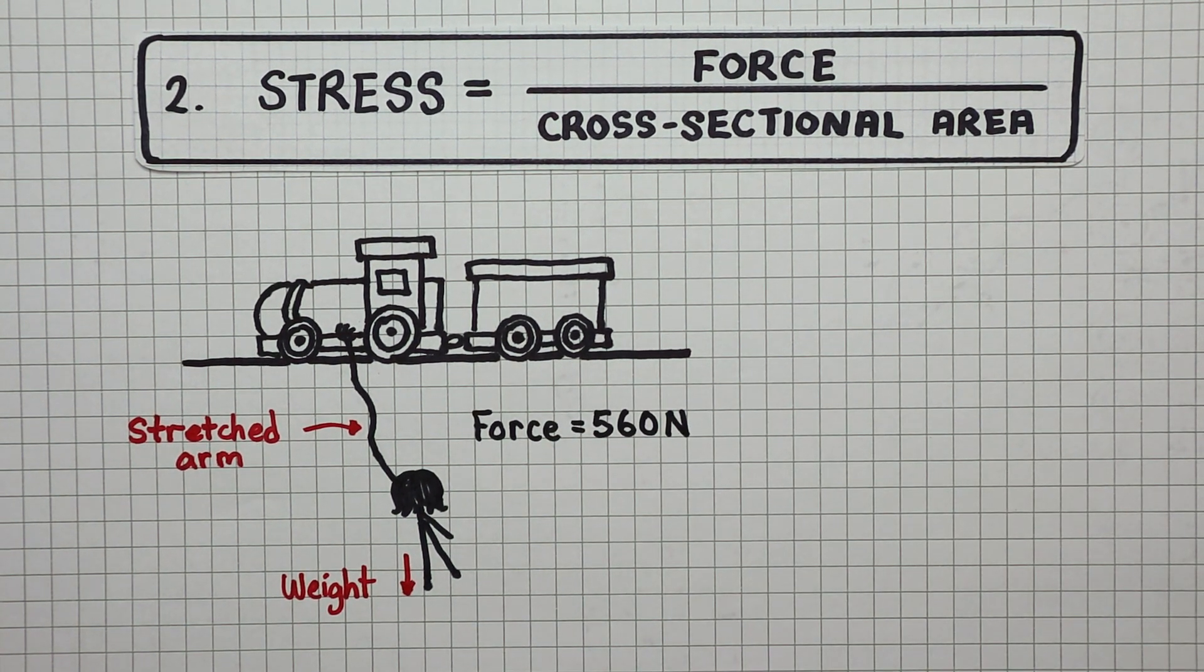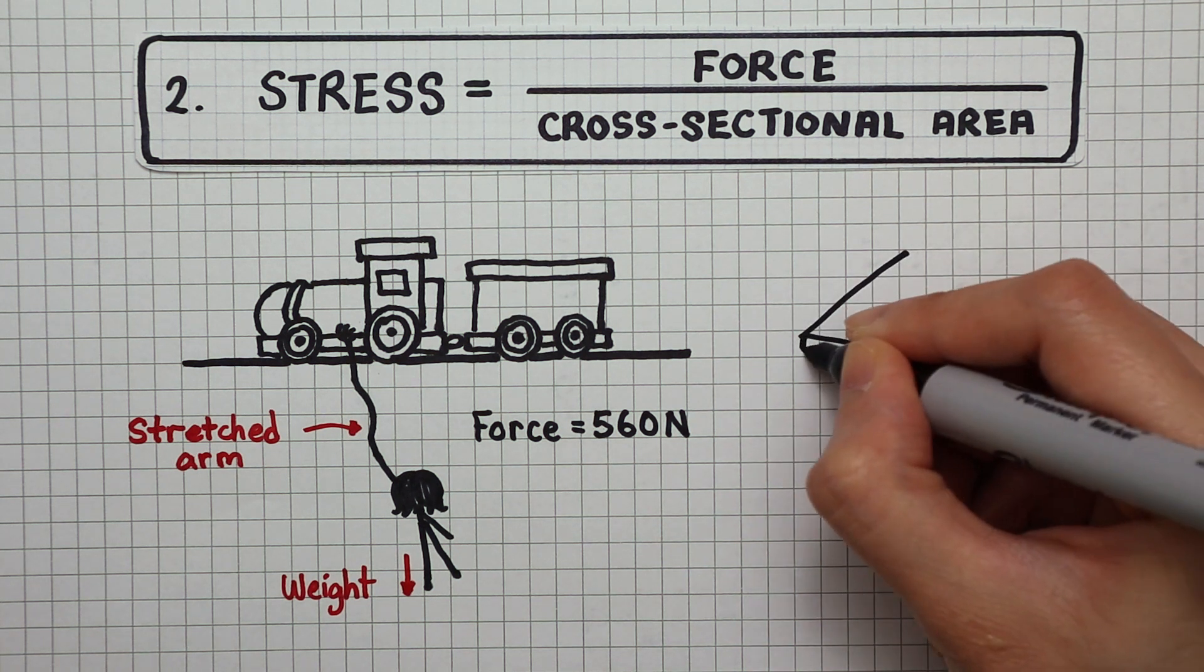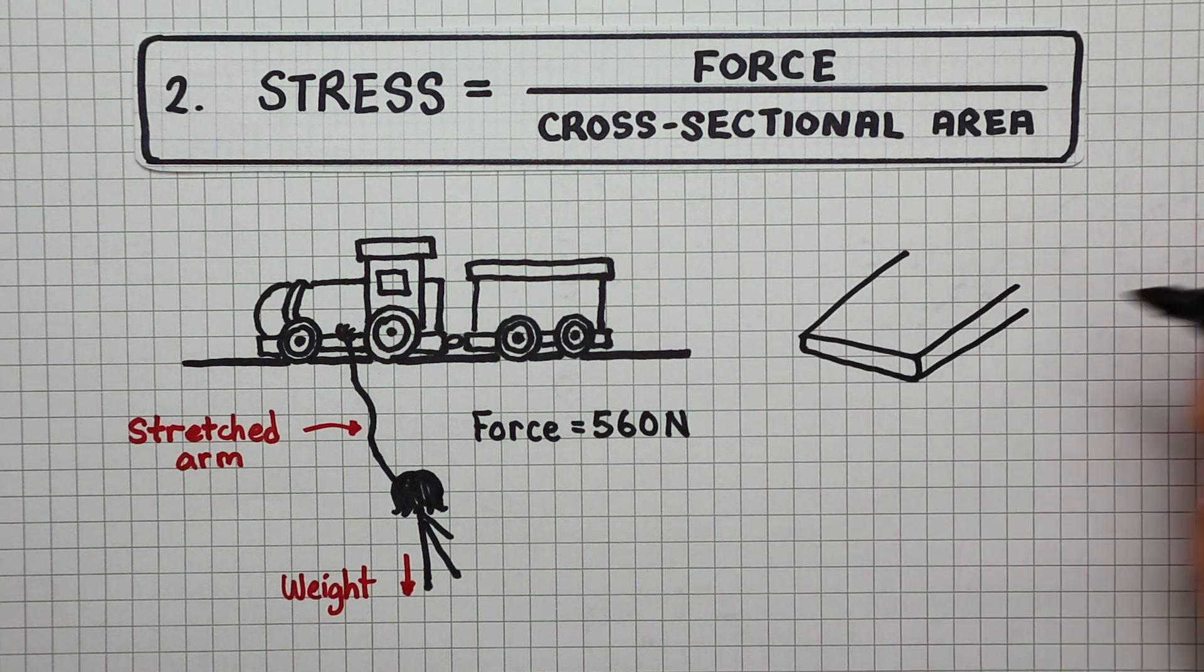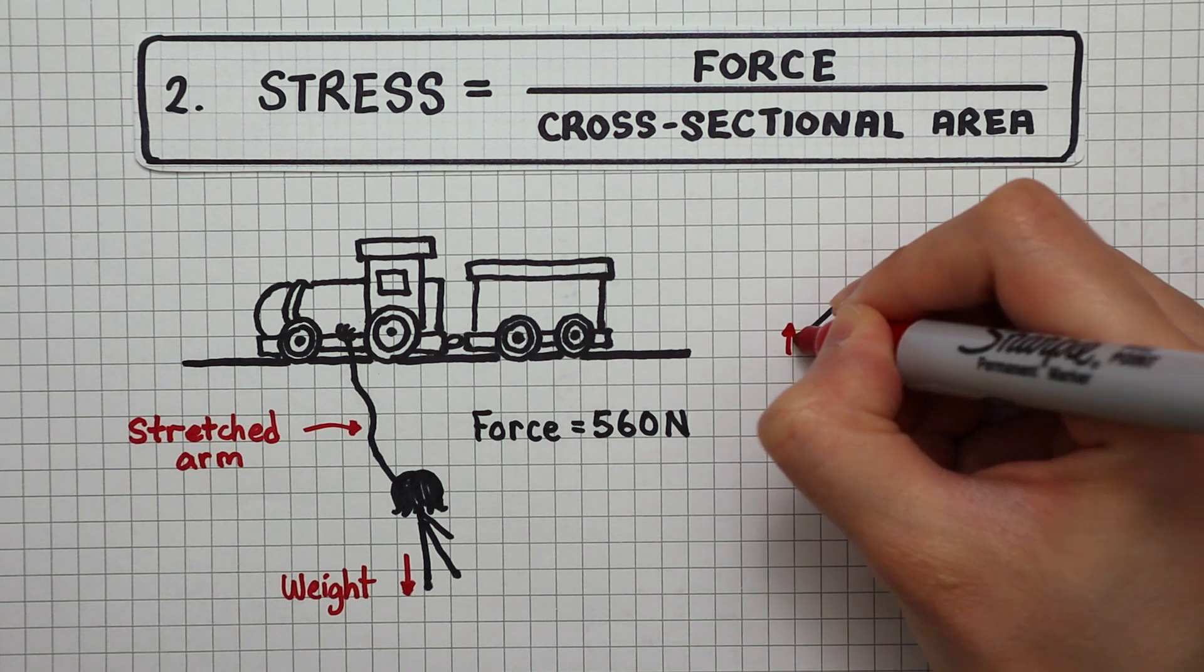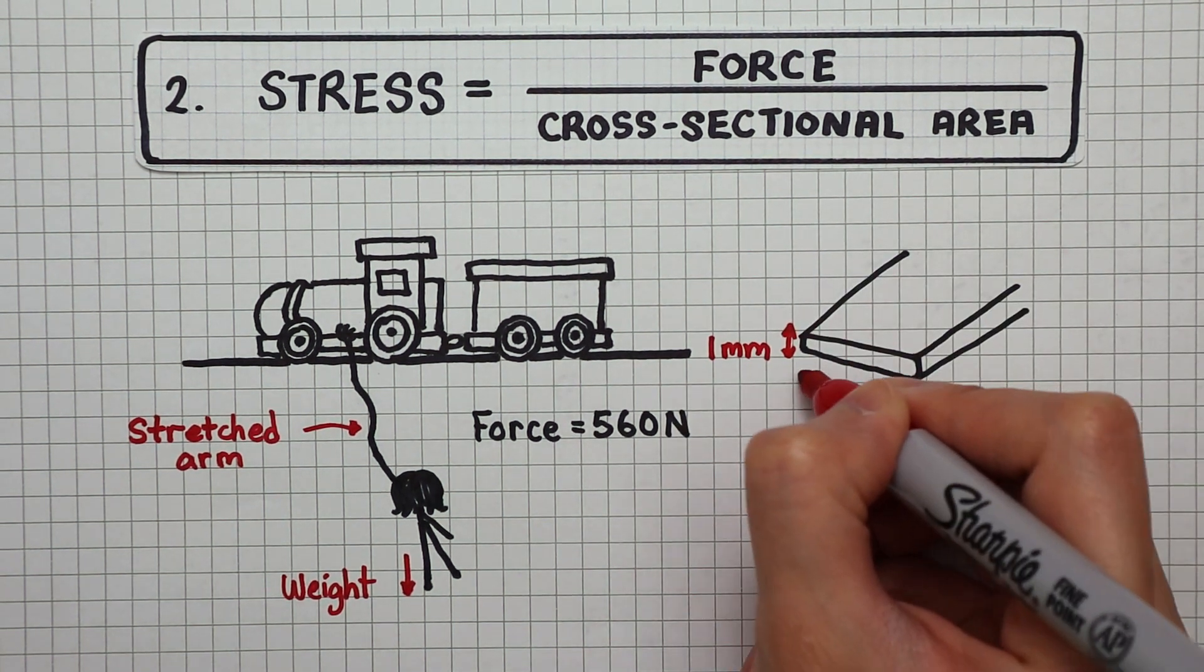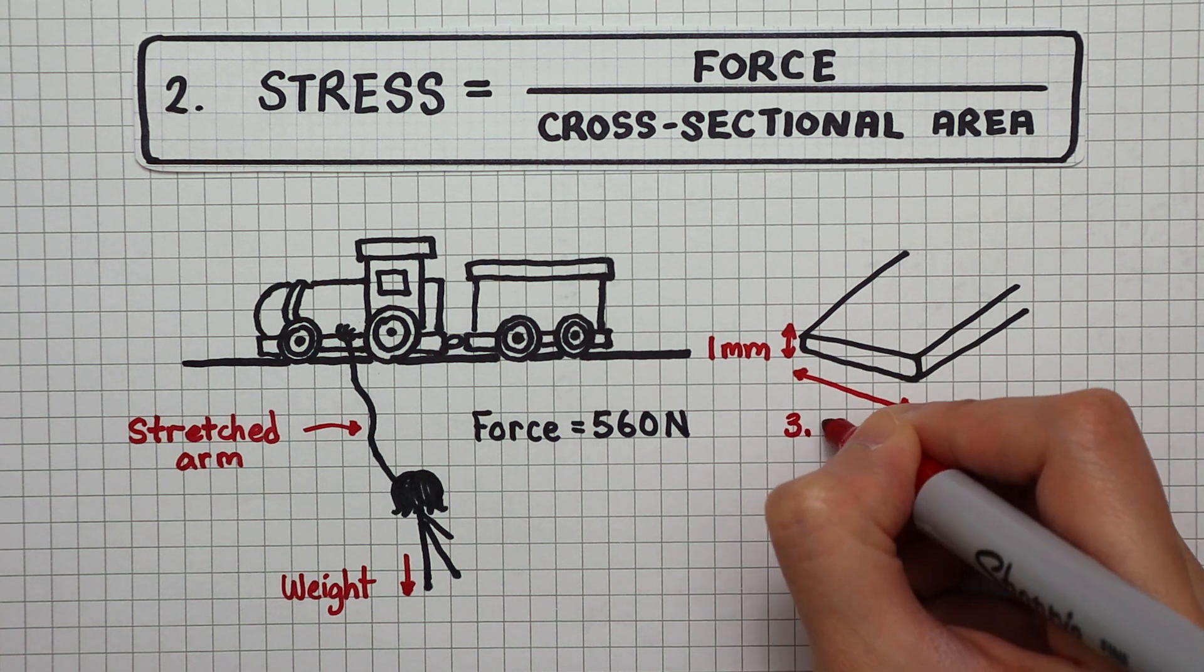When Elastigirl stretches her arm to a minimum thickness of 1 millimeter, by then her arm is more or less a thin rectangle. And according to research, adult humans on average have a wrist width of 3.14 centimeters.